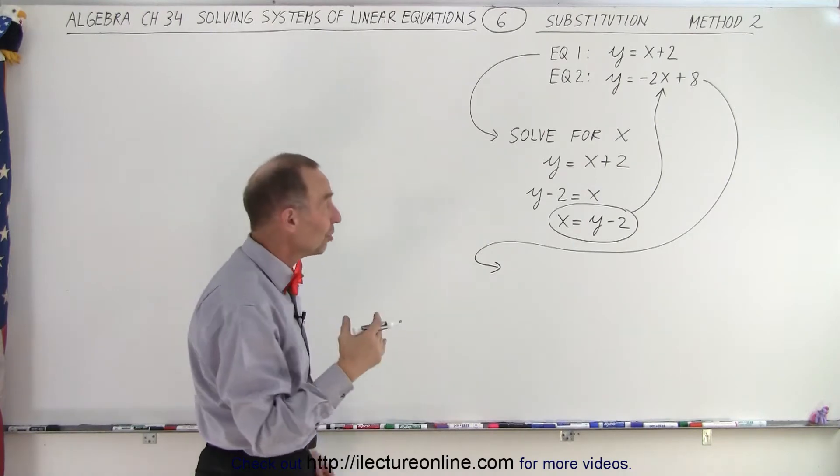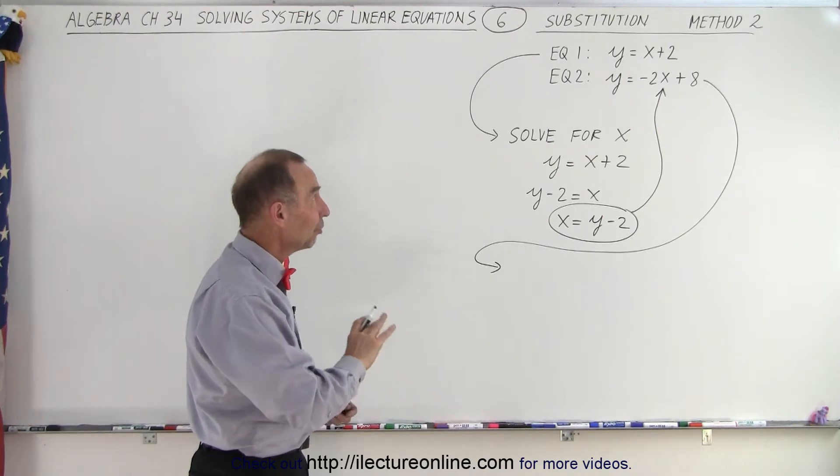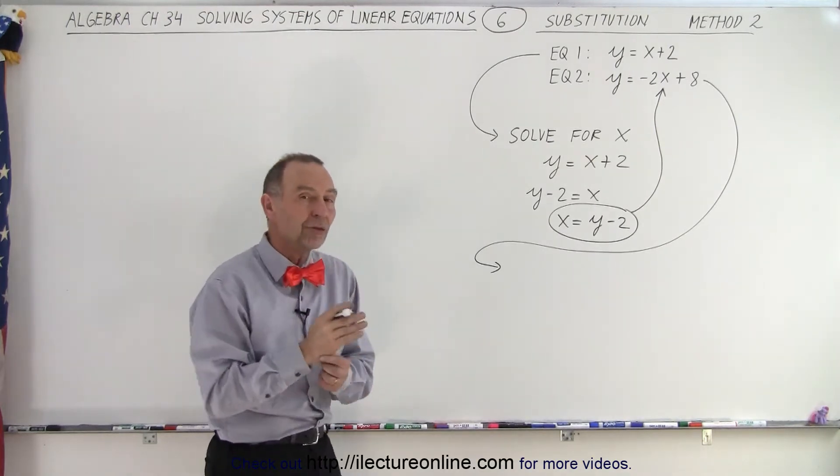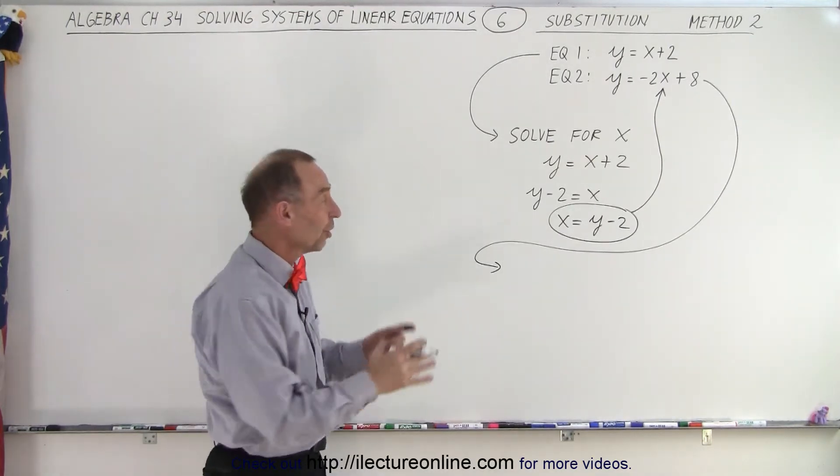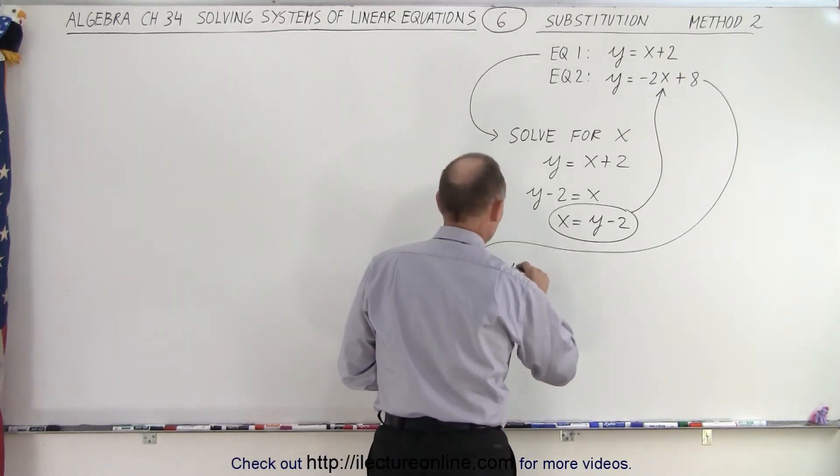The method of substitution is really eliminating one of the two variables. We have two variables, x and y. The substitution method is meant to eliminate one of the variables so you only have one variable left in an equation. So here we write the second equation.